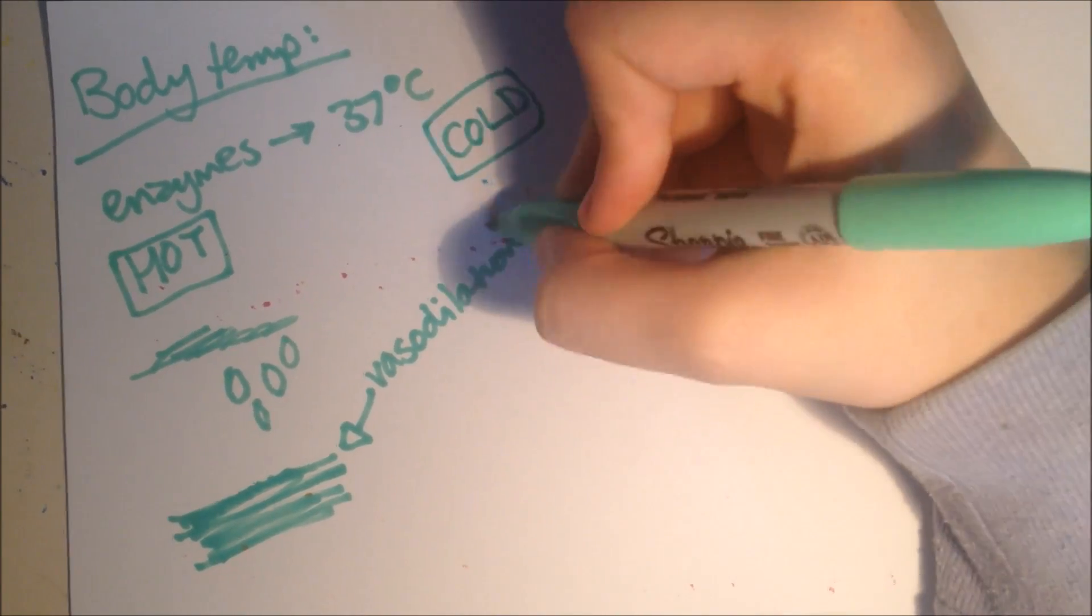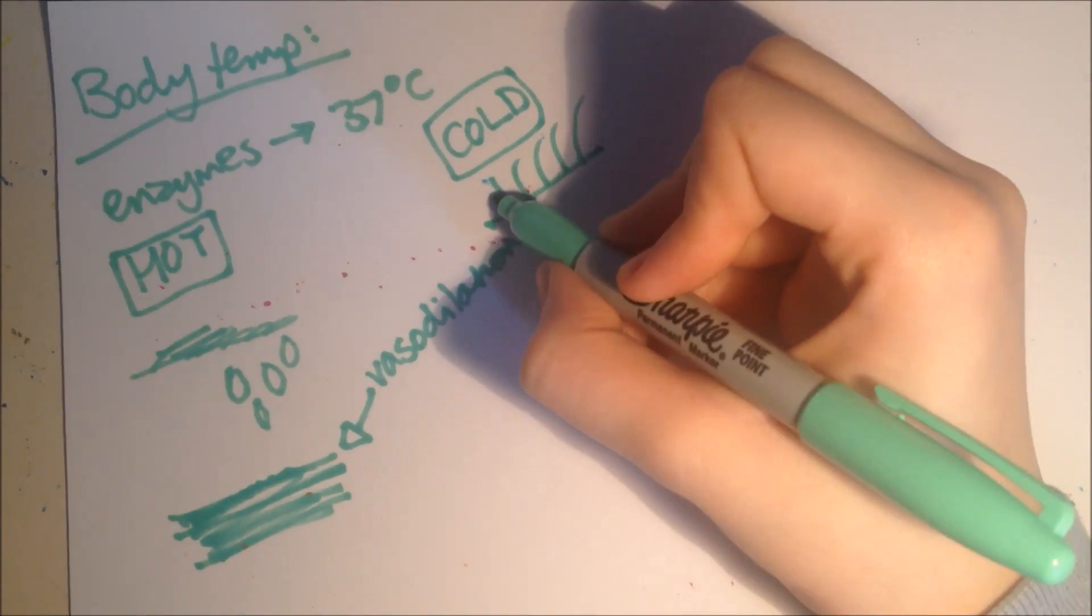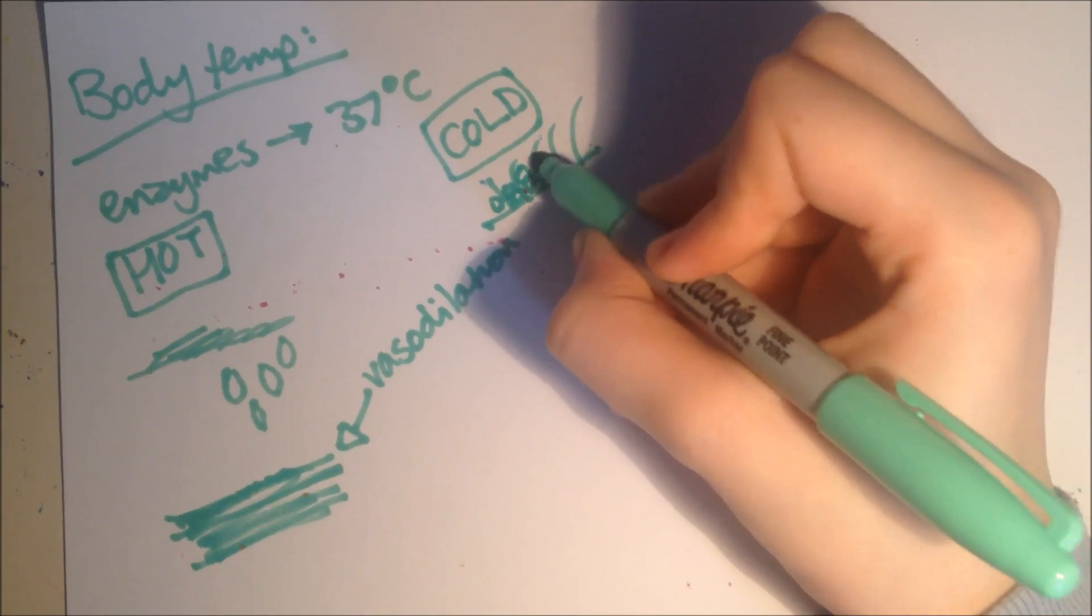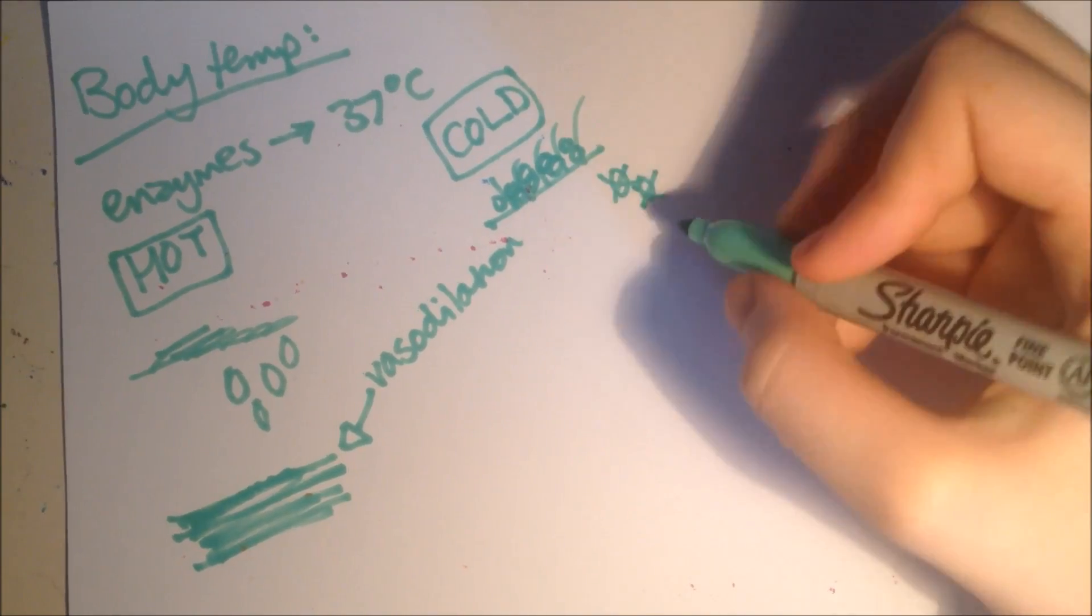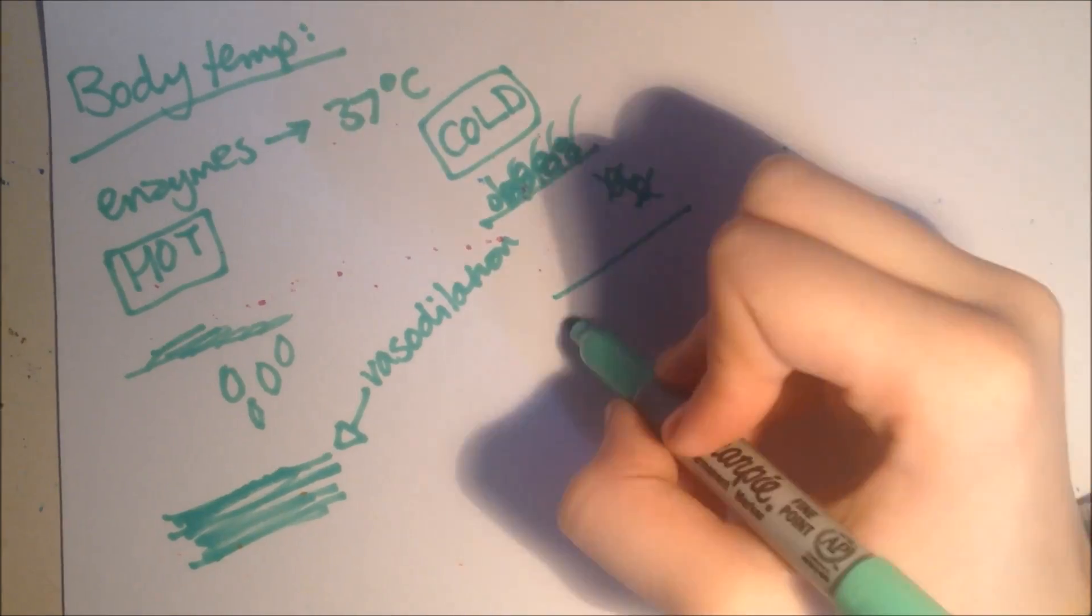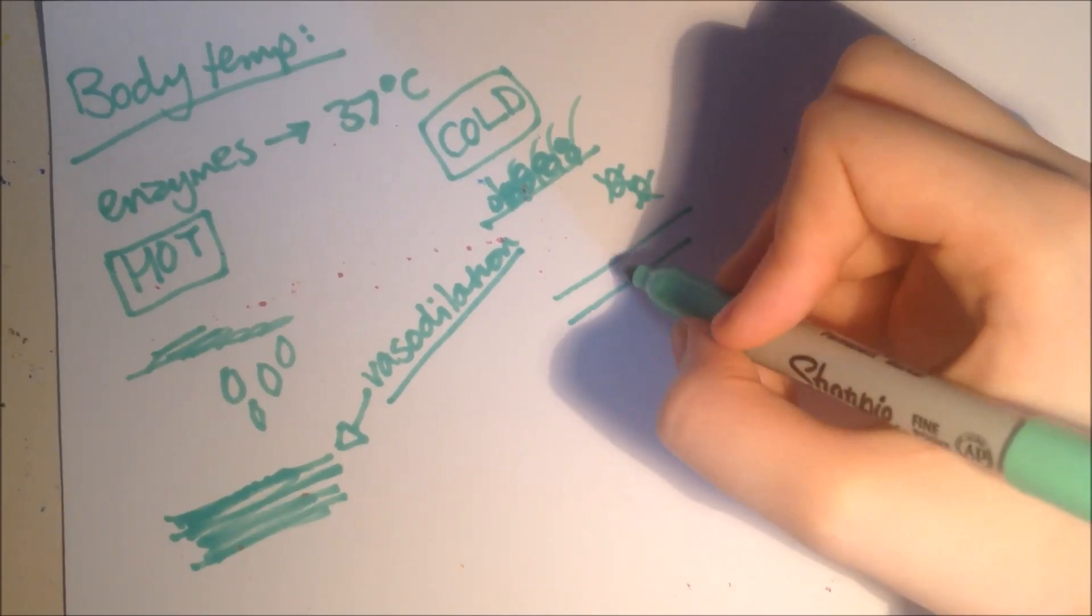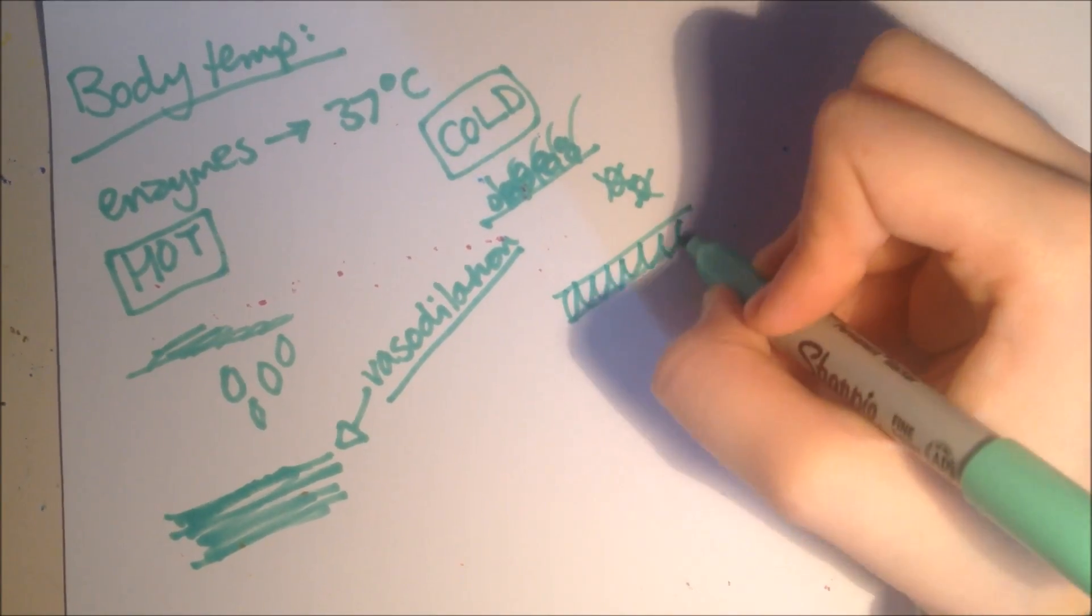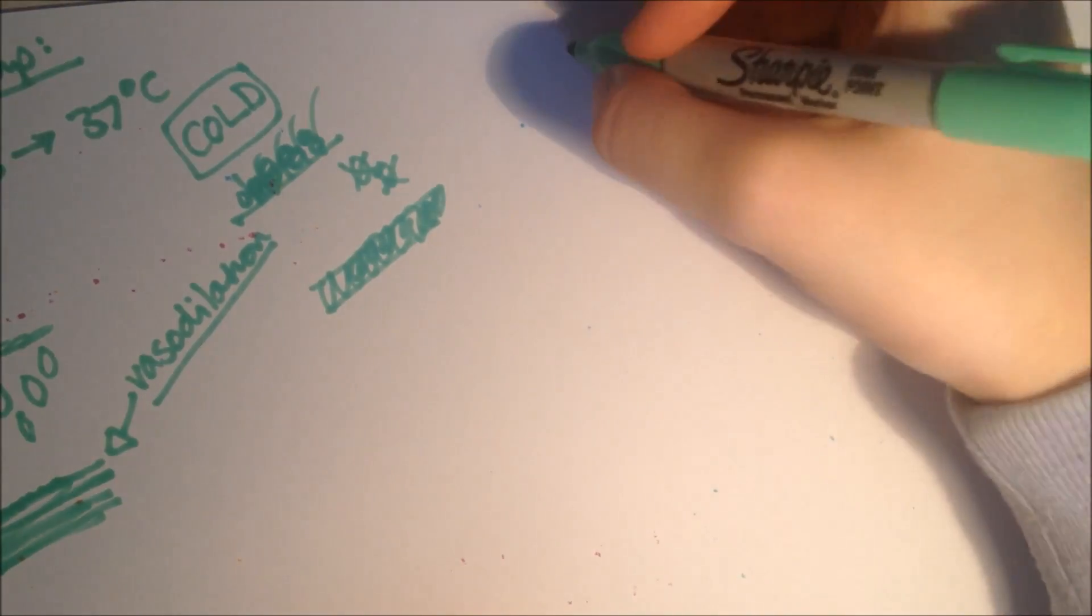And then, when you're too cold, the hairs stand on end, to trap a layer of air, since the air particles, and that'll keep you warm. Little sweat is produced. Blood vessels near the surface, constrict, vasoconstriction, so that less heat can be transferred, from the blood to the surroundings, and use the sugar, which generates heat.